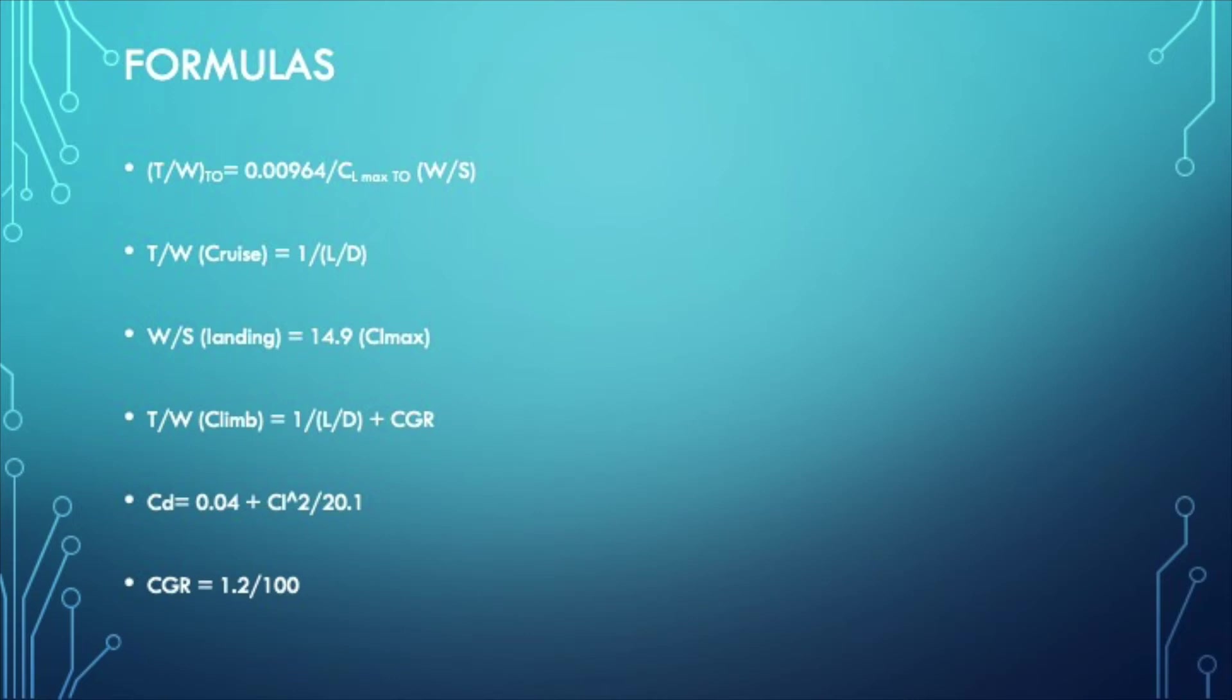So my first formula is going to be thrust-to-weight ratio as a function of wing loading in the takeoff segment. The second equation is thrust-to-weight ratio in the cruise segment, which is not a function of wing loading. Third formula is wing loading in landing, which is not going to affect thrust-to-weight ratio. Last but not least, there's thrust-to-weight ratio in climb, which is going to be a function of lift-to-drag and another parameter called CGR or climb gradient.